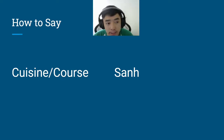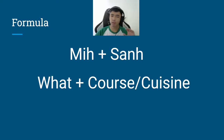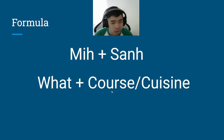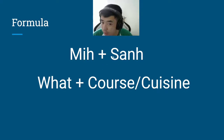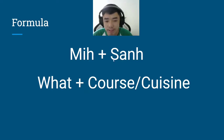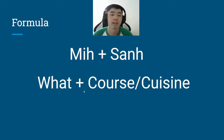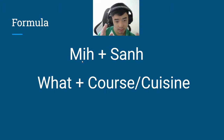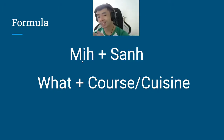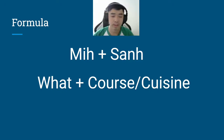There's always a formula when it comes to these. Remember 'Mii San' — that's what we learned, meaning 'what course or cuisine?' So we want to replace the 'Mii' part and add something before 'San.' Ready?